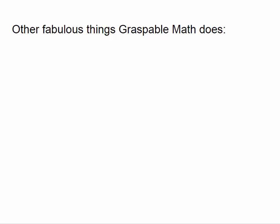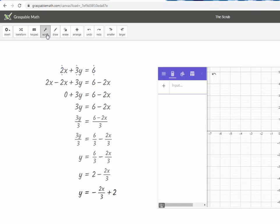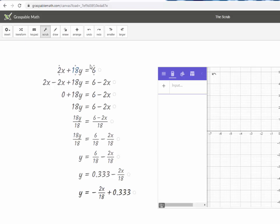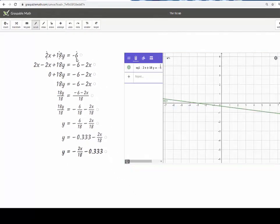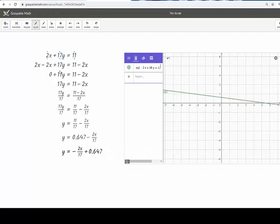A few other things I would like to show you that Graspable Math does, just to give you a little heads up, is something called the Scrub. If I click the Scrub button on this canvas, I can do term tracing, which looks like this. And if I drag the little arrows above and below, I can watch what happens with the rest of the equation as I change numbers. And if I do that while it's graphed, I can watch what happens algebraically and graphically.